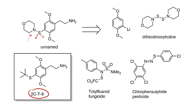Shulgin was reacting the aryllithium with dithiodimorpholine — a pretty weird-looking reagent, but it turns out it's used as a sulfur donor in rubber vulcanization, which is probably why it was available. Unfortunately, this reaction with the aryllithium just gave intractable products. Another way he tried to access this molecule was by making the sulfonamide and attempting to reduce the sulfur, but all those attempts also failed.